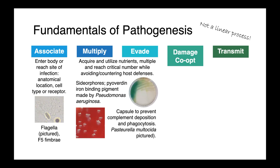Once the organism has associated, it needs to multiply and evade host immune responses. It needs to acquire nutrients and reach some critical number where it can really establish an active infection. Multiplication and nutrient acquisition can actually be quite difficult. Free iron, for instance, is at a very low concentration in the blood, and so proteins like siderophores are produced by microbes in order to scavenge any free iron that's present. Other bacteria produce capsules to prevent deposition of complement and phagocytosis — here you can see a mucoid Pasteurella multocida, which is very helpful in evading the innate immune system.